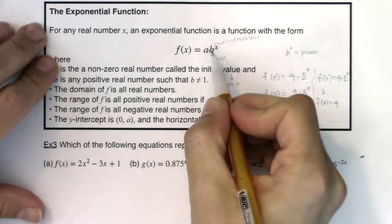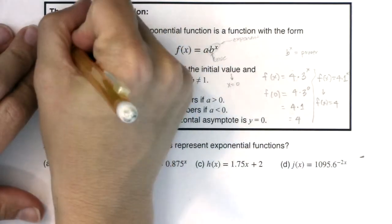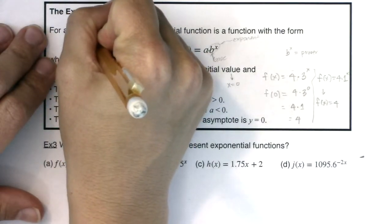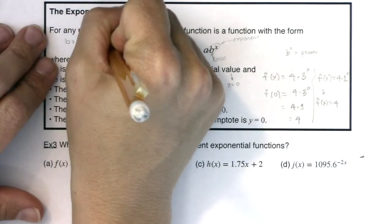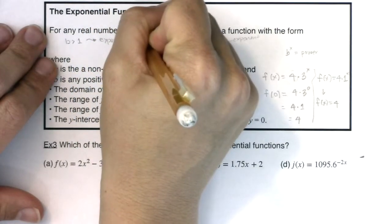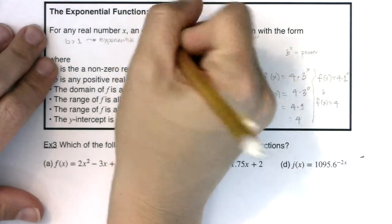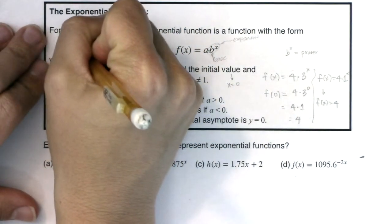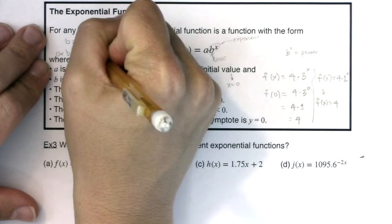So this function, if we were to actually take it a little bit further, I could just say this is the horizontal line y equals 4. Because 1 to the x is always 1. That's why b can't equal 1. Because if the base was 1, then our function is really just that constant, that initial value. Now anytime b is greater than 1, you're going to have exponential growth. If b is greater than 1, you have exponential growth.